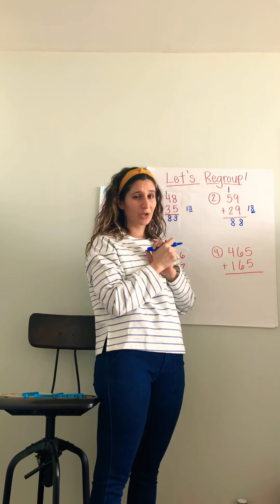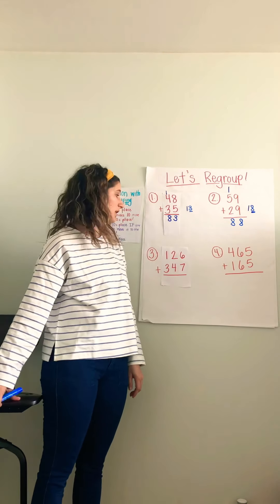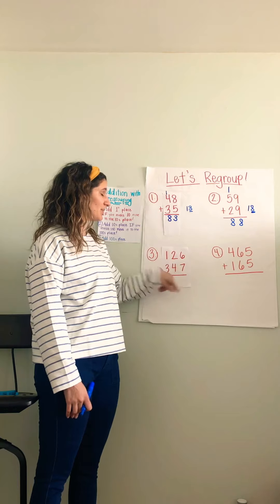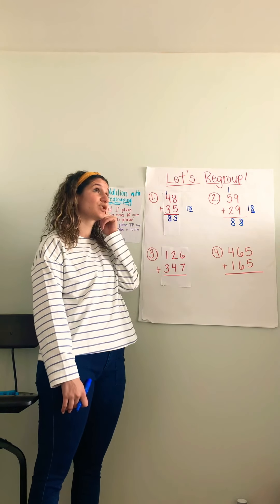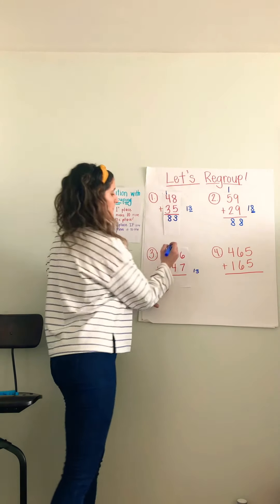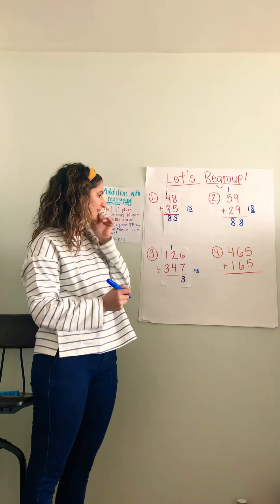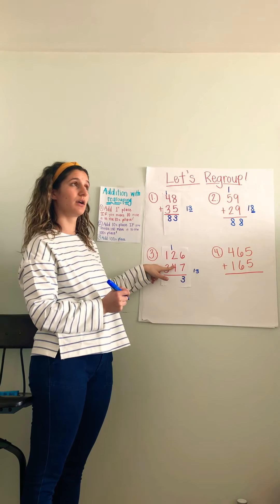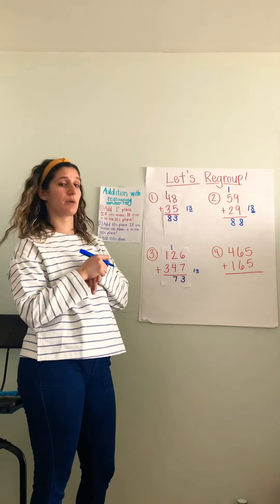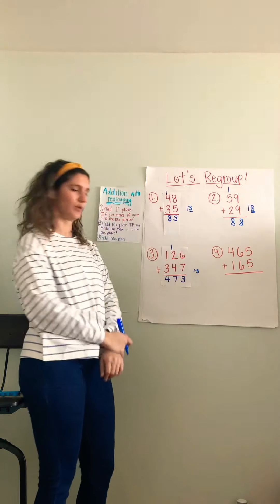Are you ready to make this a little bit trickier? Now we have some three-digit numbers. Again, we're going to go step by step and start with our ones place: six plus seven. Six plus six is 12, seven is one more — it must be 13 again. 13 has a number in the tens place, so I bring my three down. Now I have two plus four — six, plus one more from the carry — seven. Now I'm ready for my hundreds place: three plus one — 473.